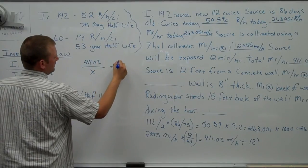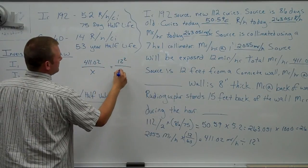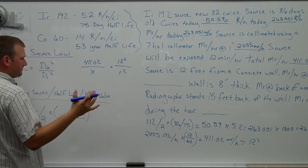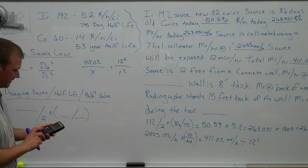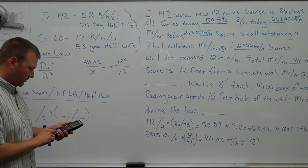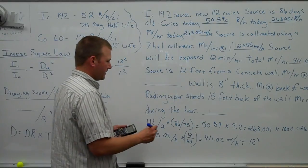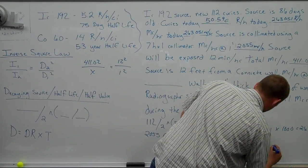We're going out 12 feet squared. We're at 1 foot squared, this times this divided by that. You can just shorthand it right there. So 411 divided by 12 squared brings it down to 2.854.